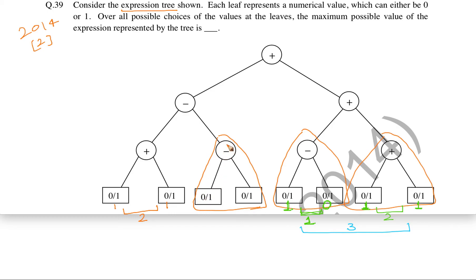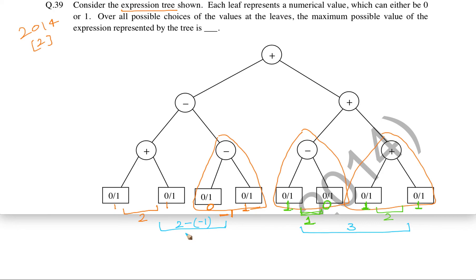We need to find the minimum value of the right inner subtree because the operation is subtraction. You might think 0 minus 0 equals 0, but there is another value smaller than 0: if we take 0 on the left and 1 on the right, then 0 minus 1 equals minus 1, which is smaller than 0. So the minimum value this subtree can get is minus 1. That gives us 2 minus (minus 1), which is 2 plus 1, which is 3. So the maximum possible value of this entire right subtree is 3.